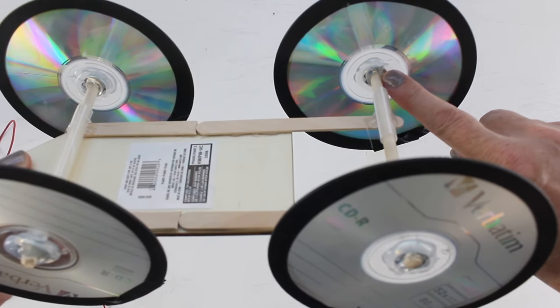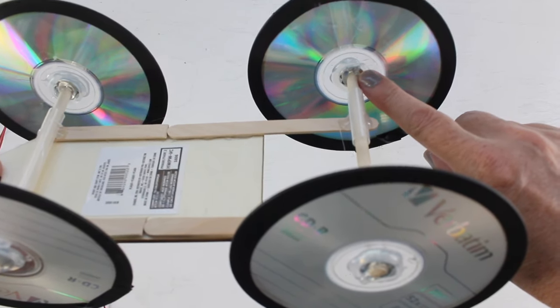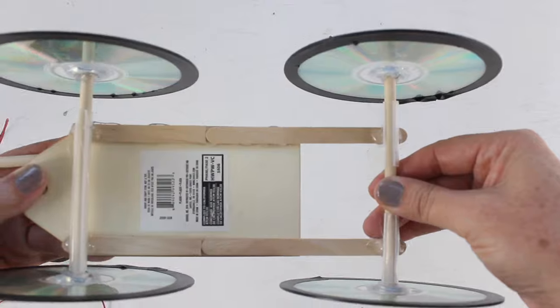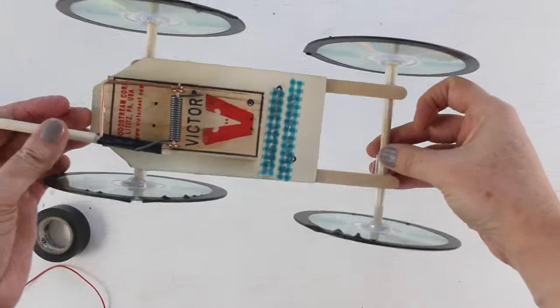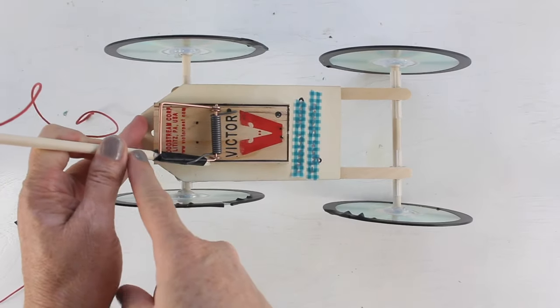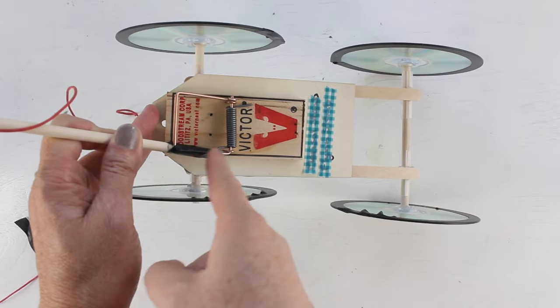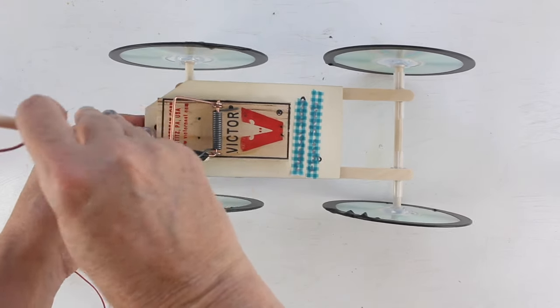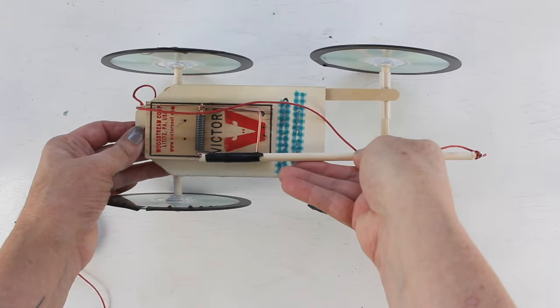Hot glue all of this on as well. And then hot glue the stick onto this side. This is what's going to give you the propel to move forward.